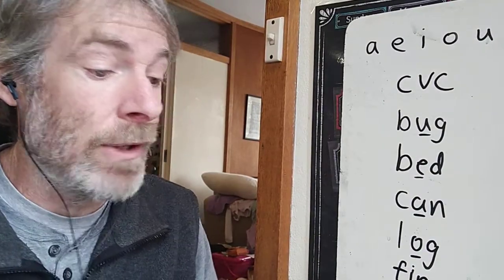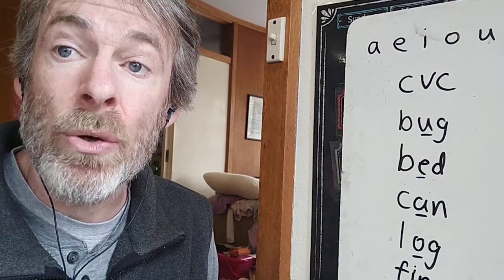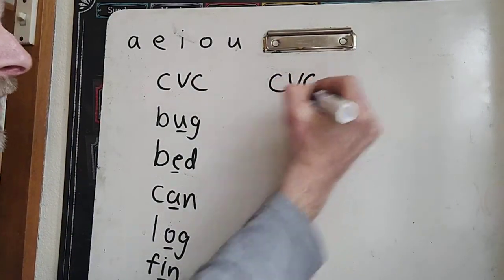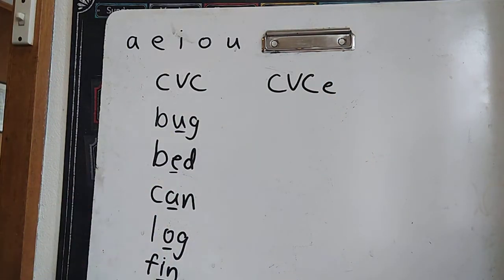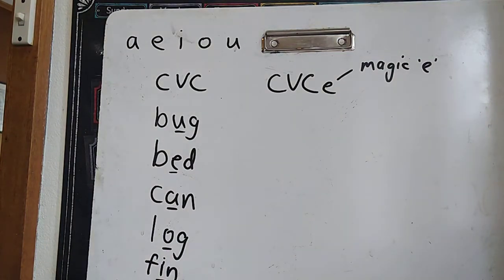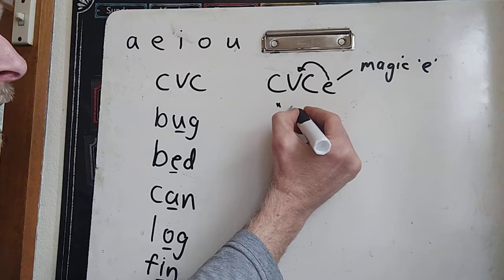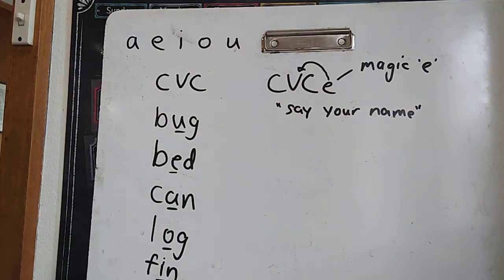What we're going to talk about now is this new spelling pattern. With our vowels, the spelling pattern is going to use those long vowel sounds. The spelling pattern is called Magic E. Our words are going to look like C-V-C, just like before — consonant, vowel, consonant — but this time we're going to have an E on the end. This E is our Magic E. Its job is to talk to the vowel and say, 'Say your name,' which is the long vowel sound.